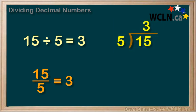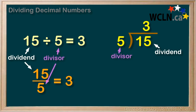Recall that 15 in these cases is the dividend - the number being divided. The 5 is the divisor - the number that divides the dividend. And 3 is the quotient, or the answer.